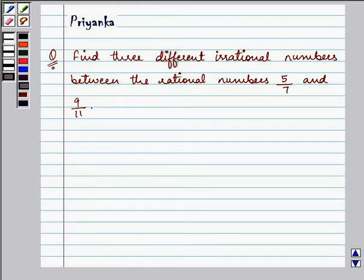Hi and how are you all today? I am Priyanka and let us do the following question which says find three different irrational numbers between the rational numbers 5 by 7 and 9 by 11.